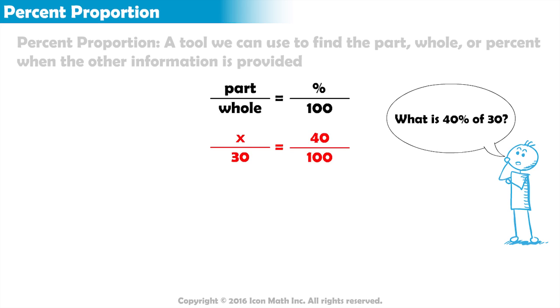To solve a proportion, we must consider the diagonals. x and 100 form one diagonal, 40 and 30 form the other diagonal.